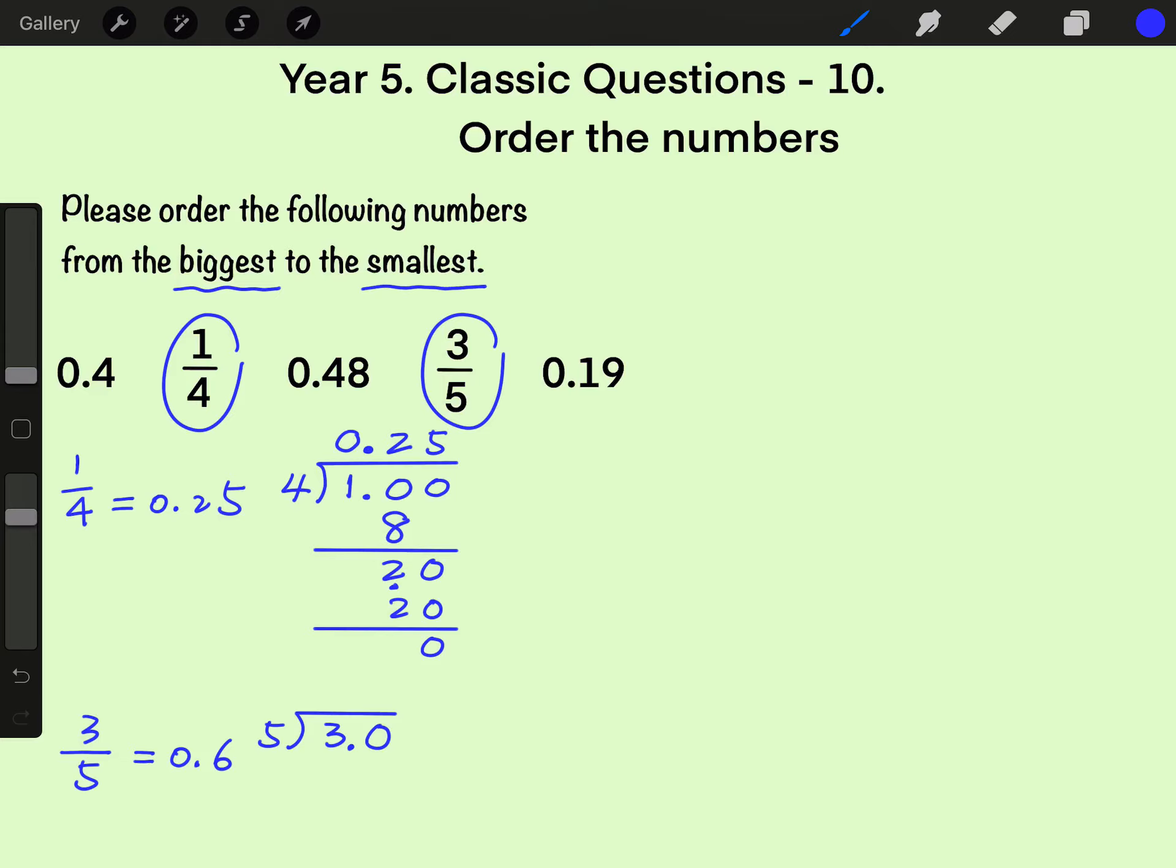For the quotient, because 3 is smaller than 5, we have 0 on the one digit position and a decimal point. Now, on the tenth position, 6 times 5 is 30. 30 minus 30 is 0. That's why three fifths equals to 0.6.